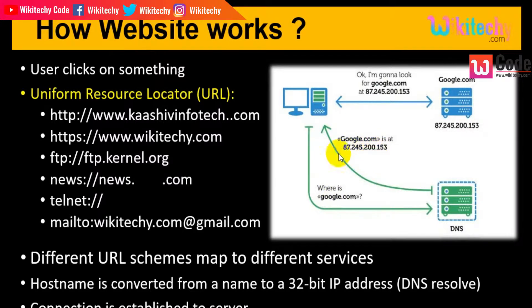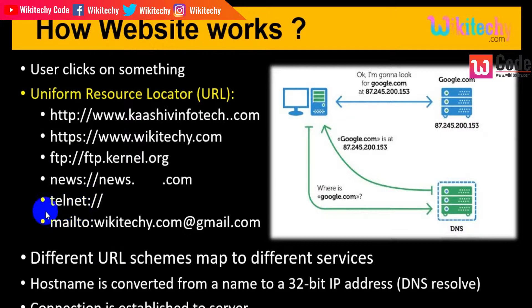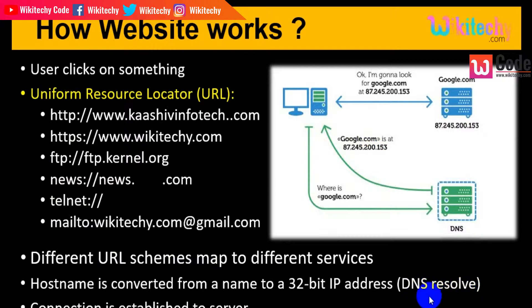The URL is called a Uniform Resource Locator. Different URL schemes map to different services: HTTP for a normal website, HTTPS for a secure website, FTP, news, telnet, and mail. The hostname is converted from a name to a 32-bit IP address — this is called DNS resolving. Afterwards, a connection is established with the server.